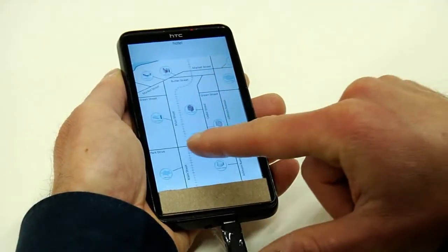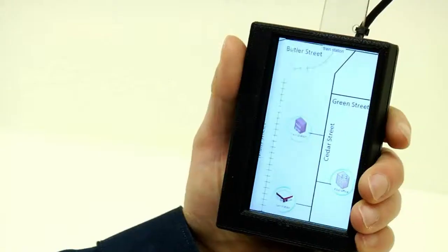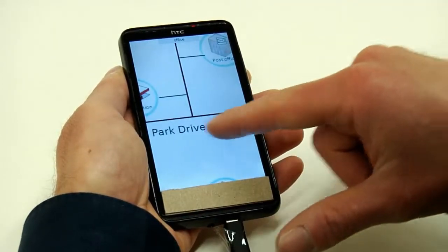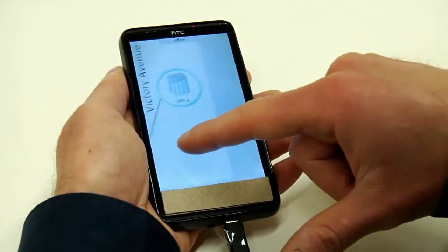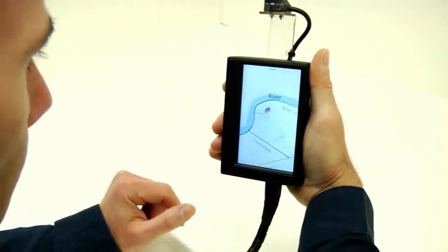We investigated interaction with maps using a smartphone to compare the lens navigation with pinch and flick navigation. Participants were asked to traverse a large map to locate landmarks and touch them with their finger.